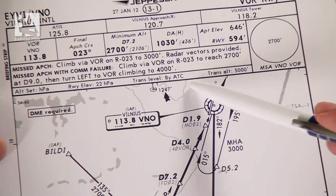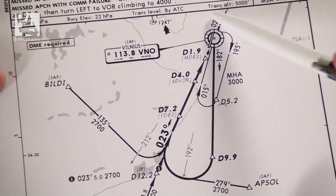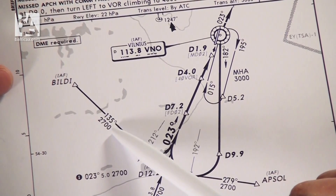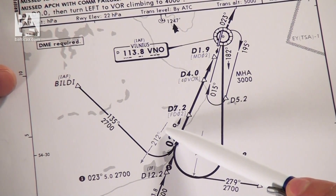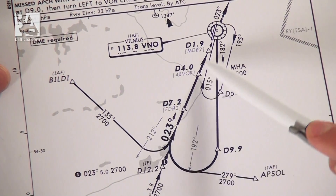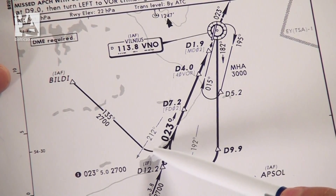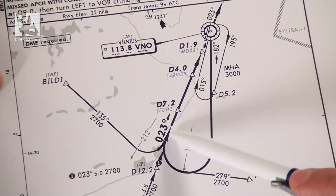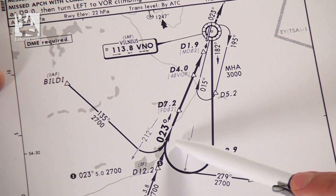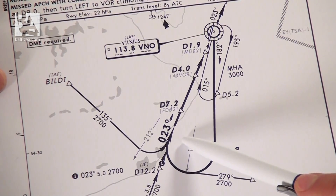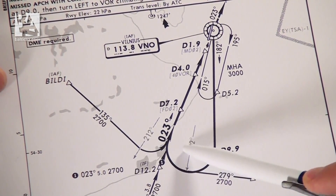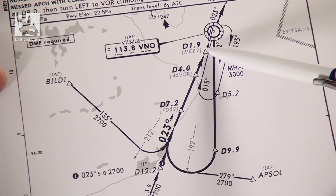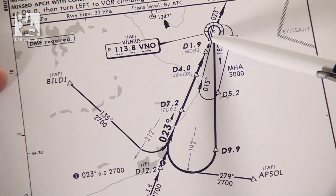Basically below that we have the general map for the approach. If we would continue from BILDI, we would fly 135 degrees at 2,700 feet, and at a radial of 212 from Victor November Oscar we would turn left to a course of 023 towards Victor November Oscar. No doubt a different from the ILS, but on different non-precision approaches it might be common that the approach course will not be the same as the runway course, as you can see. From DME 1.9 we would really continue visually towards the runway. This would be our minimum point.